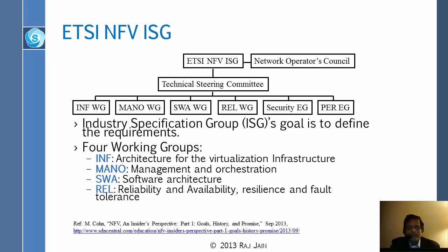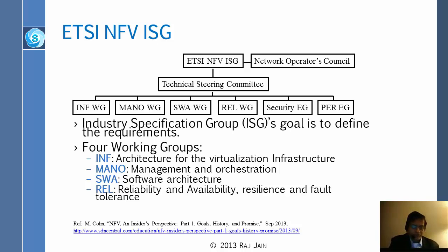NFV has an ISG — an Industry Specification Group — with about 100 carriers working together. The ISG has four committees working on different issues: INF working on architecture, MANO working on management and orchestration, SWA working on software architecture, and REL working on reliability. There are also two expert groups working on security, performance, and portability.